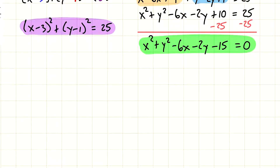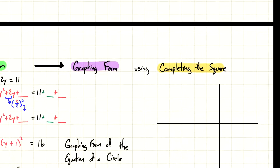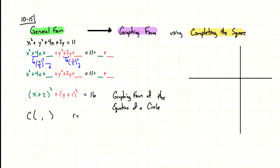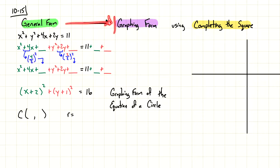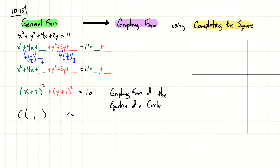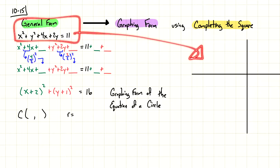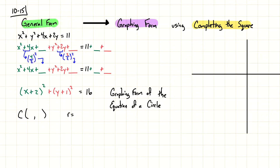Let's try this. Our goal is to take an equation in general form, transition it to graphing form using completing the square, and then graph the circle. In general form, it's not really possible to graph without a graphing calculator. So if we don't have one, we need it to be in graphing form. Our equation in general form is x squared plus y squared plus 4x plus 2y equals 11.